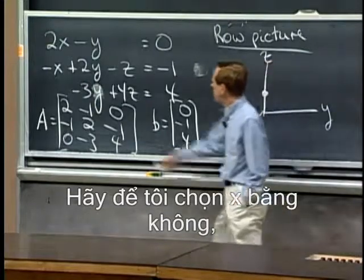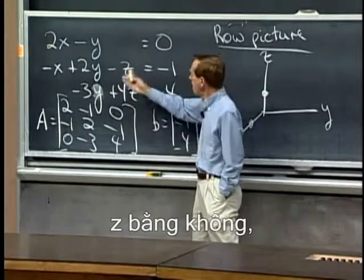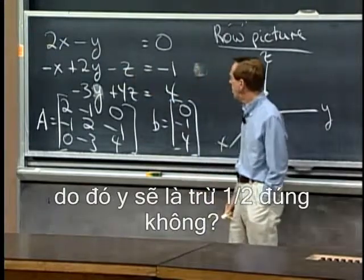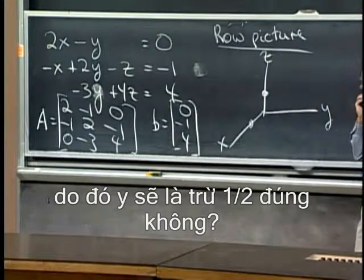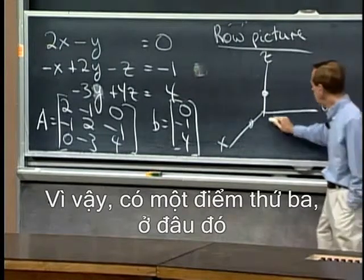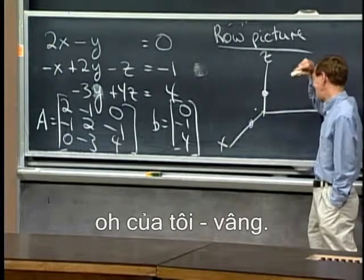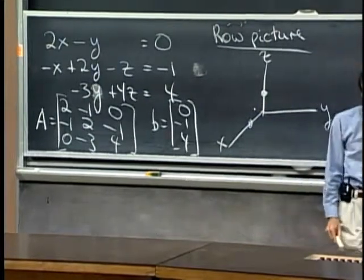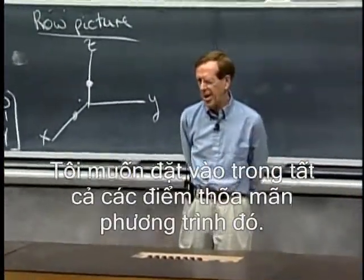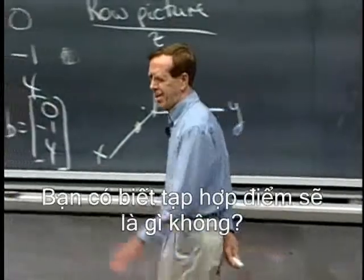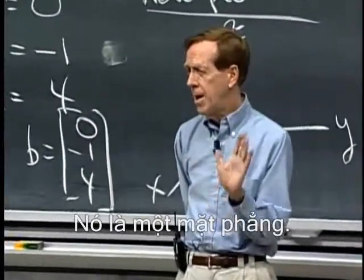And probably I want a third point here. Let me take x to be 0, say x to be 0, z to be 0, then y would be -1/2, right? So there's a third point somewhere. Let's see. I want to put in all the points that satisfy that equation. Do you know what that bunch of points will be? It's a plane.